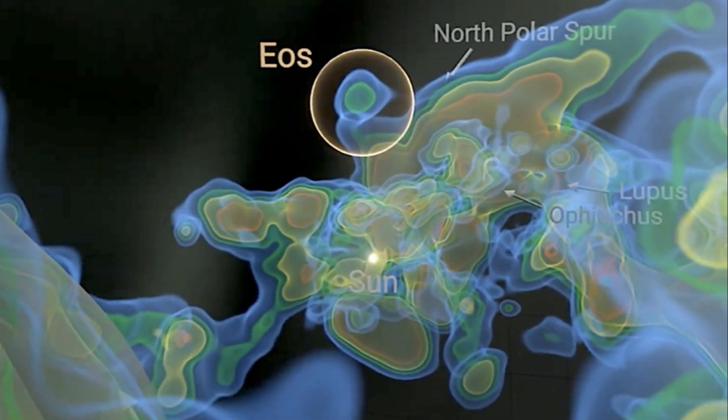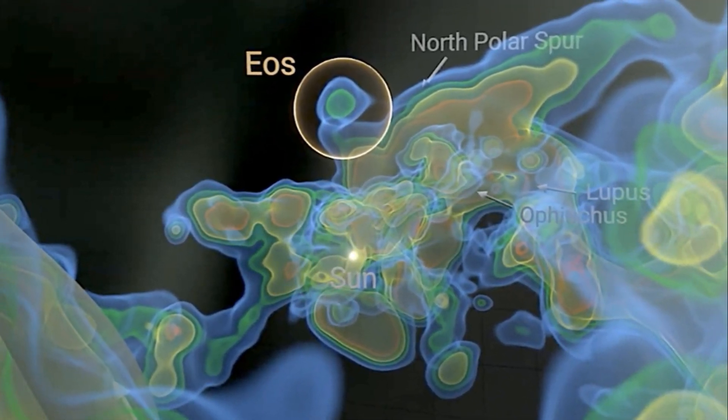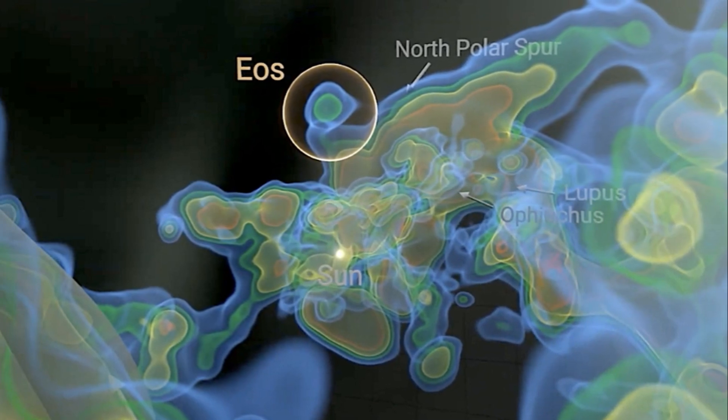Its crescent shape, sculpted by interstellar winds and radiation, hints at a turbulent past, a silent ballet of cosmic forces shaping its destiny.